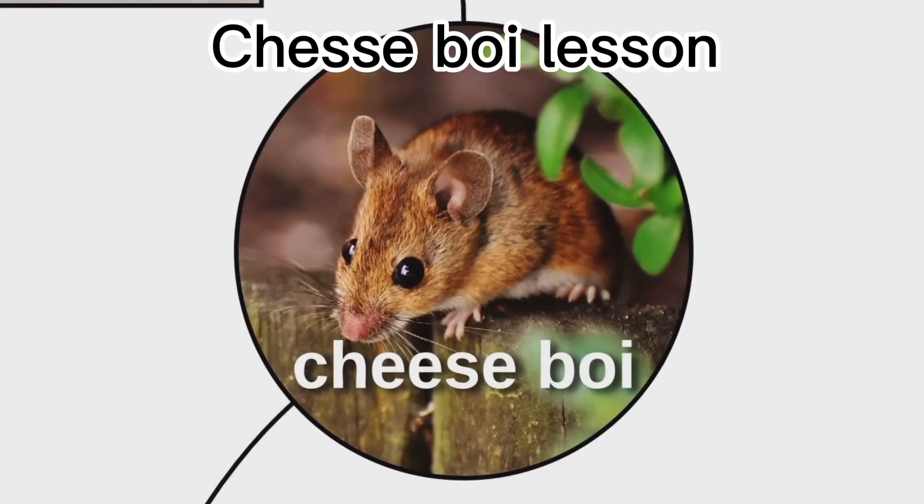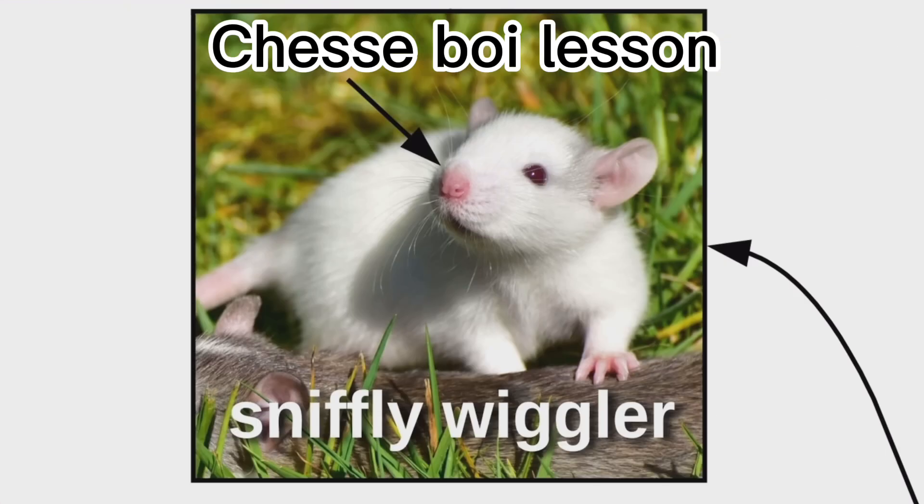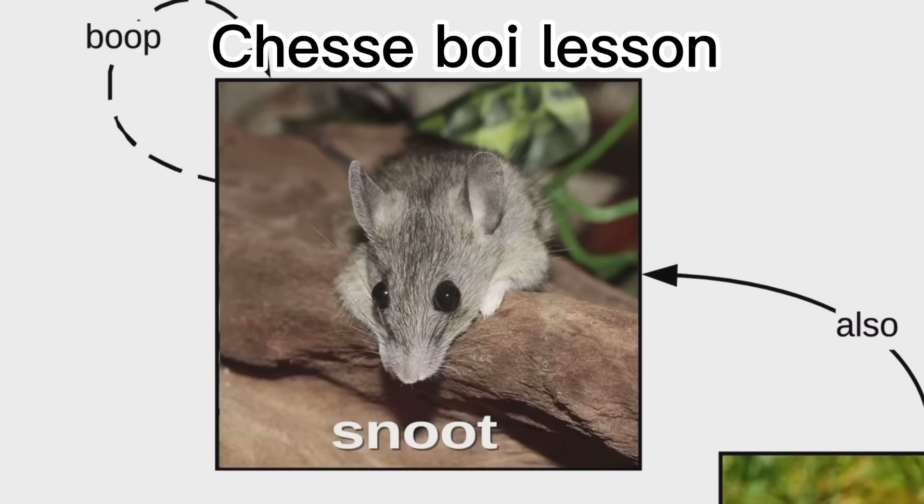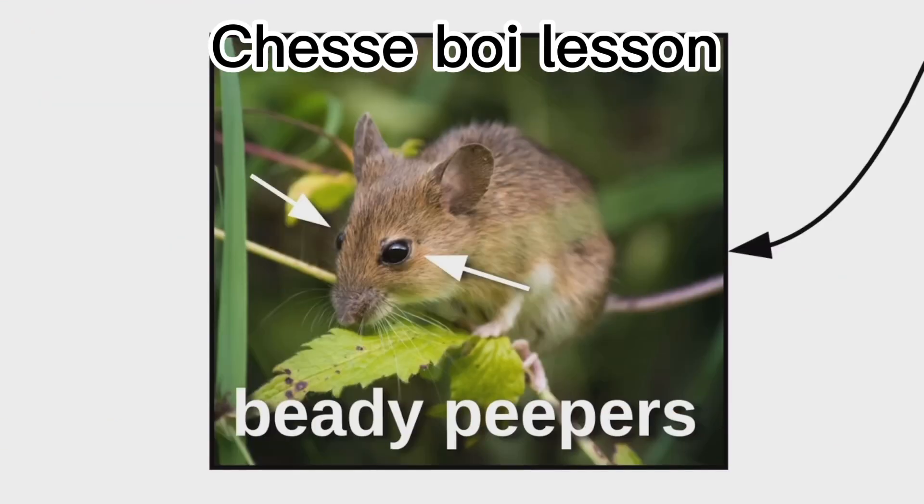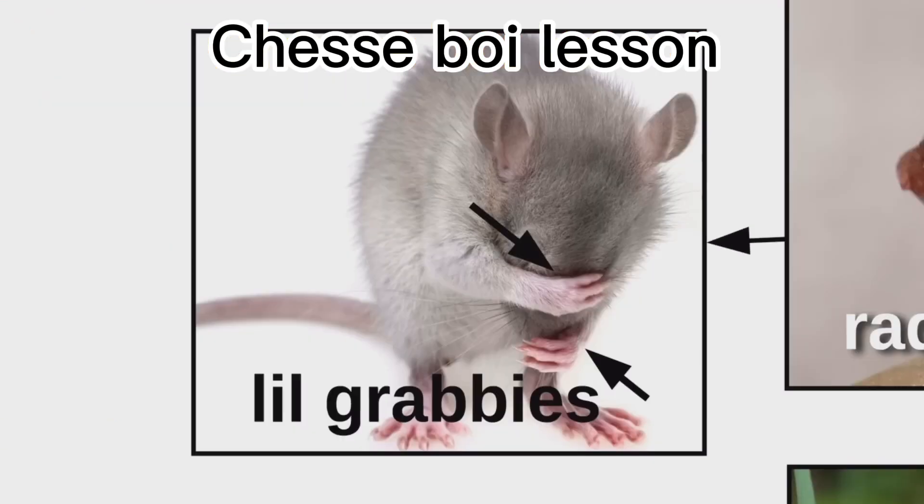To understand cheese boys, you have to understand rat anatomy. First, there's the sniffly wiggler, also called the snoot. Give it a little boop. Then there's the radar dishes, beady peepers, whippy bit, little grabbies, and the chomper.